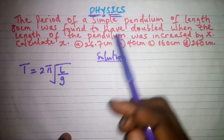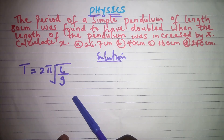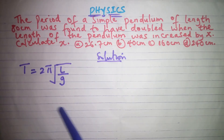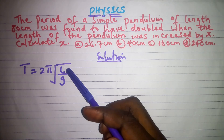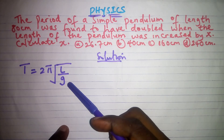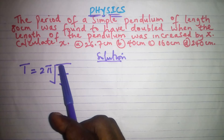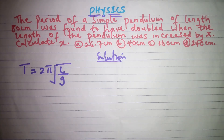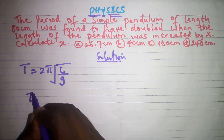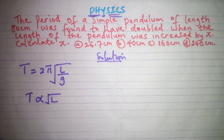This formula connects the period and length of a simple pendulum. This is how to calculate the period: T stands for period, L stands for the length of the string, and g stands for the acceleration due to gravity. We need to get the relationship between the period and the length, so using the horizontal test, we know that T is directly proportional to the square root of the length.